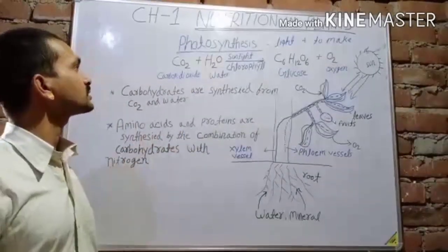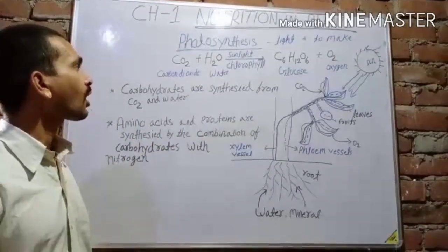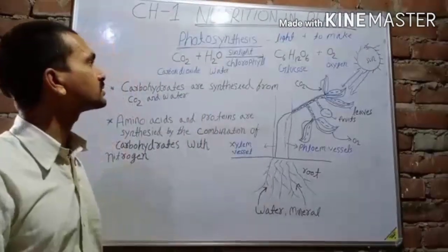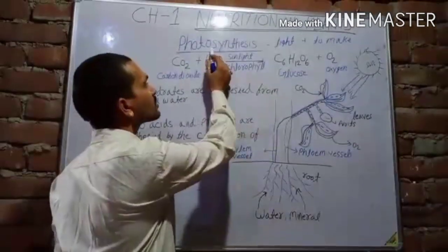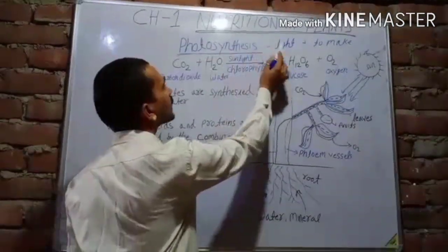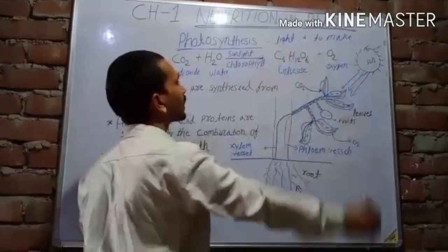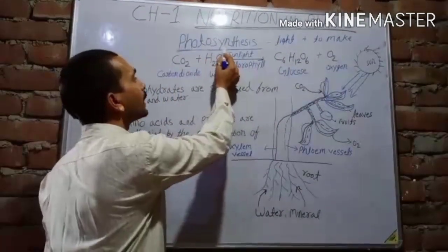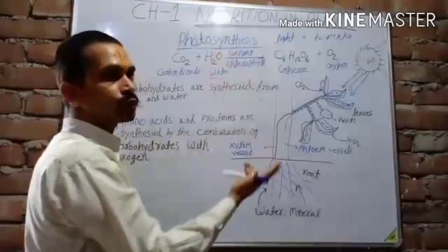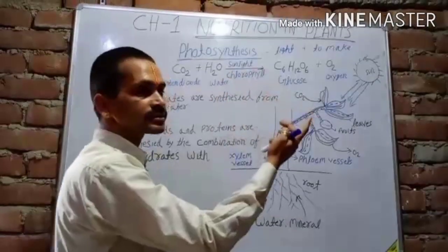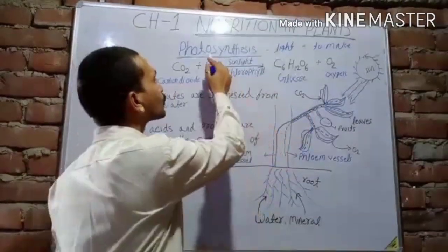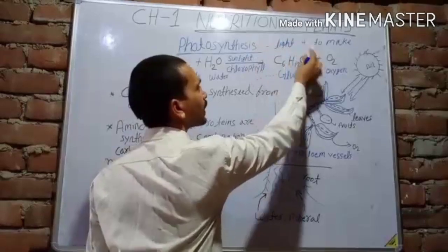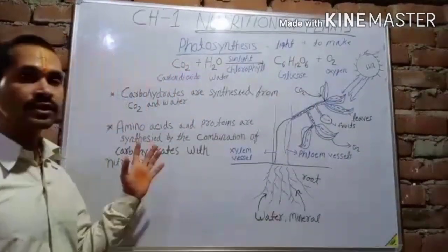What is photosynthesis? Photo means light and synthesis means to make. Photosynthesis is made with two words: photo and synthesis. Photo means light and synthesis means to make.